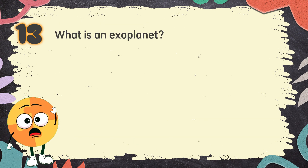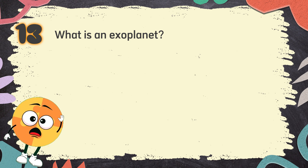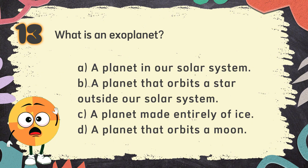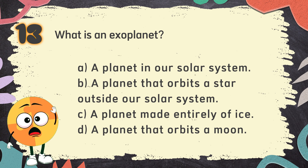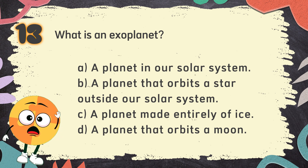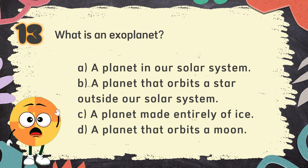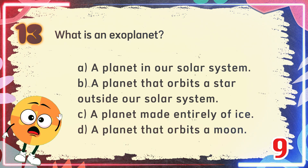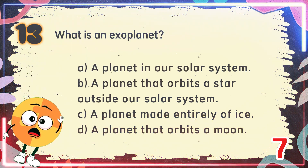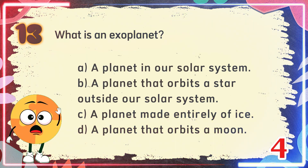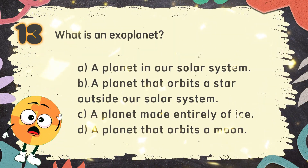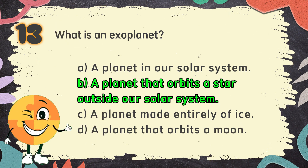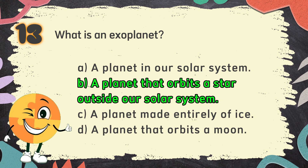Number 13. What is an exoplanet? The choices are: A. A planet in our solar system. B. A planet that orbits a star outside our solar system. C. A planet made entirely of ice. D. A planet in our solar system. The correct answer is B: a planet that orbits a star outside our solar system.